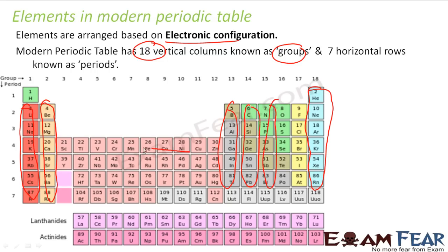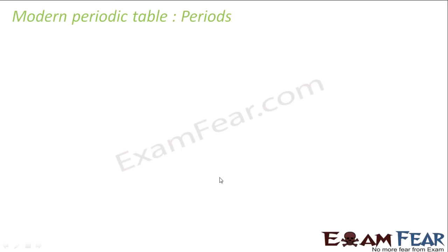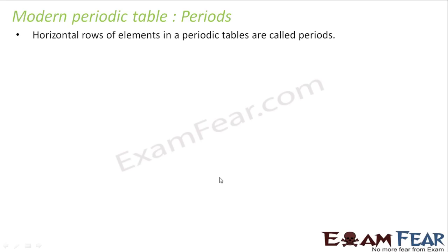Elements in a group share the same chemical property, and that is what happens when you take elements in a vertical fashion. Horizontal rows are called periods. The modern periodic table has periods and groups. Horizontal rows of elements in the periodic table are called periods.